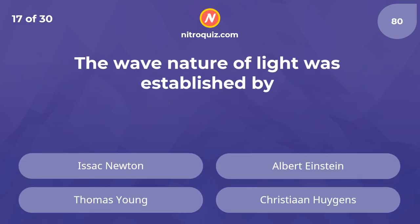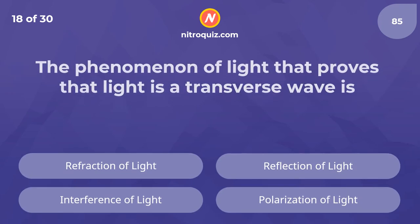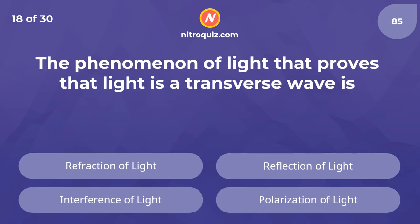The wave nature of light was established by — the answer is Christiaan Huygens. The phenomenon of light that proves that light is a transverse wave is — the answer is polarization of light.